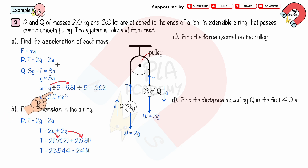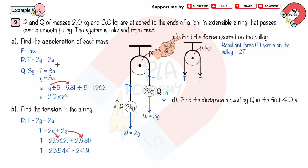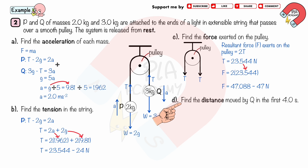Part c: Find the force exerted on the pulley. Two tension forces T act on the pulley downward, so the resultant force is 2T. Substituting T = 23.54 N, we get the resultant force F = 47 N (2 significant figures).